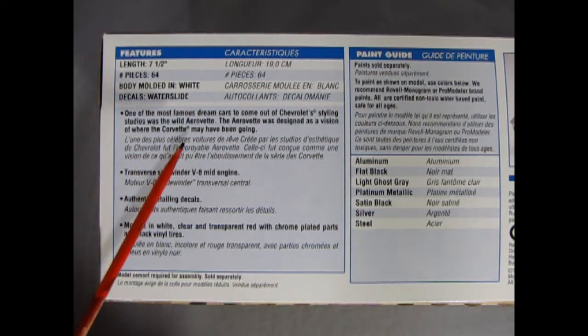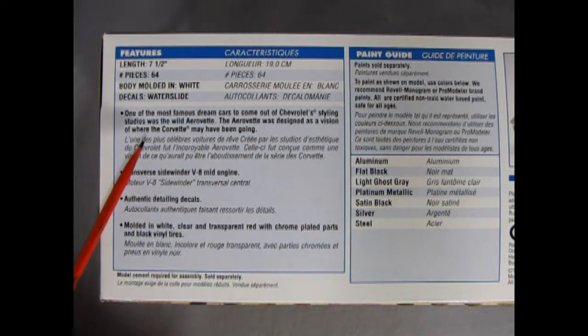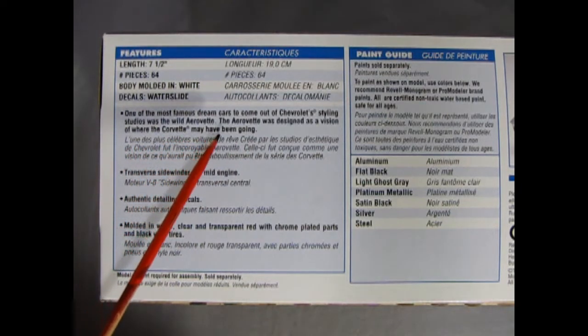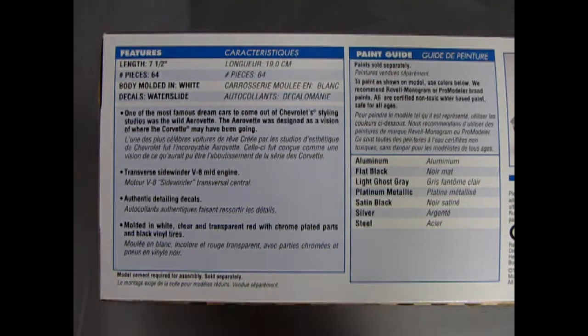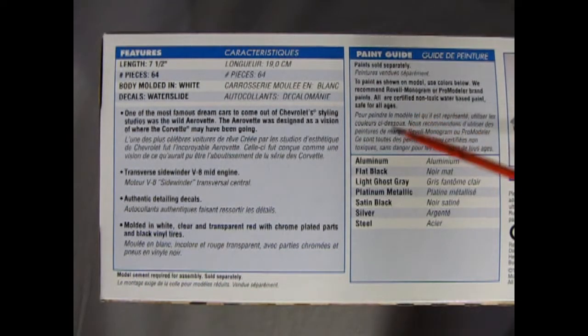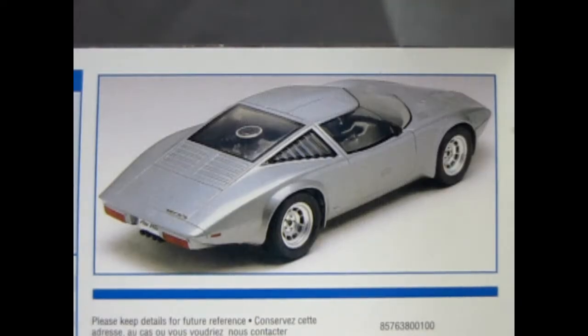One of the most famous dream cars to come out of Chevrolet's styling studios was the Wild Aerovette. The Aerovette was designed as a vision of where the Corvette may have been going. Transverse sidewinder V8 engine. Authentic detailing decals. Molded in white clear and transparent red with chrome plated parts and black vinyl tires. And over here they also give you a painting guide with the color call outs. Here we get a wonderful rear three-quarter shot of this car and you can see just how aerodynamic and awesome it looks.